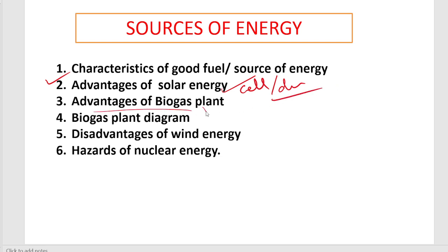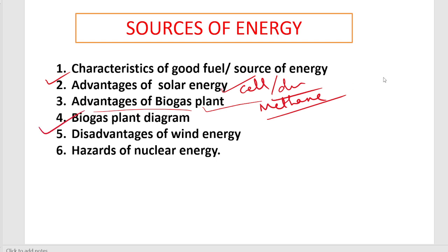Advantages of a biogas plant may be asked. The main fuel obtained from a biogas plant is methane. The constituents of biogas are: methane, carbon dioxide, hydrogen, and hydrogen sulfide. Also, the diagram of a biogas plant should be noted and studied.